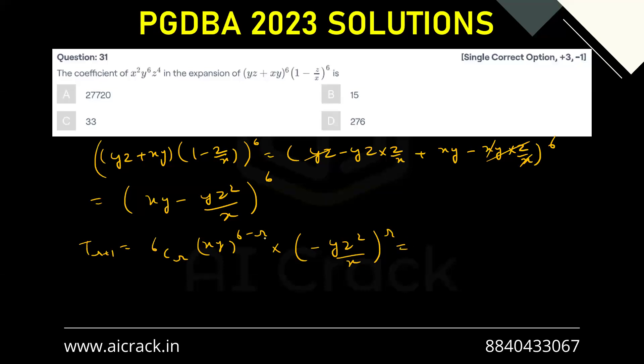Now, if you take the x term over here, that would be x^(6-r) from here and x^(-r) from here. So that would be x^(6-2r). Multiplied by, we have y^(6-r) and y^r from here. So this gets cancelled out.